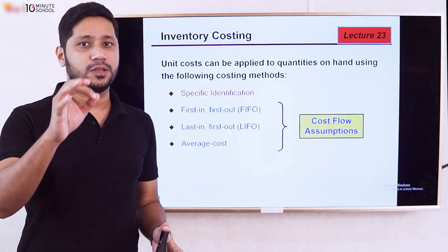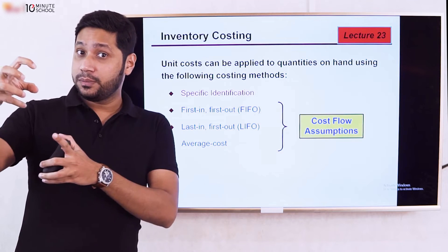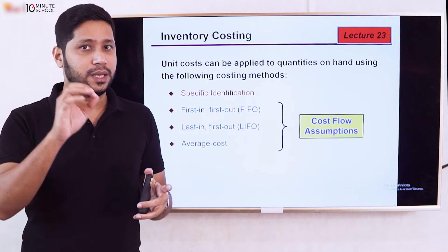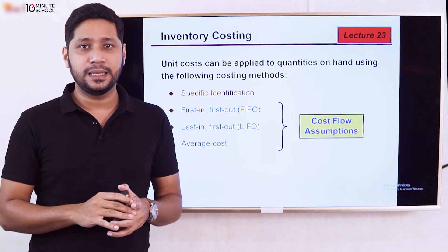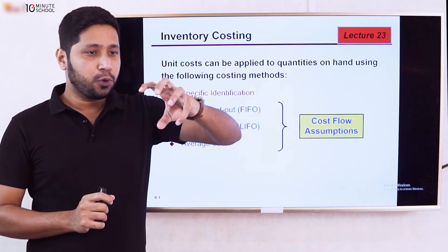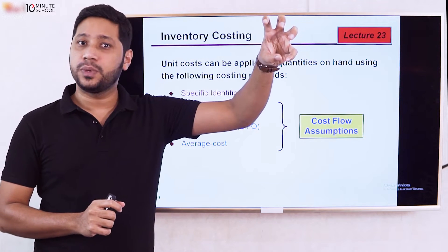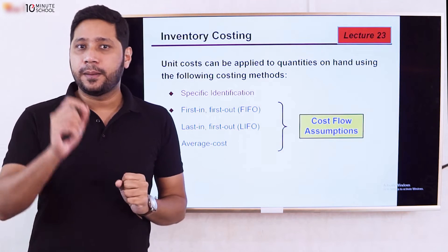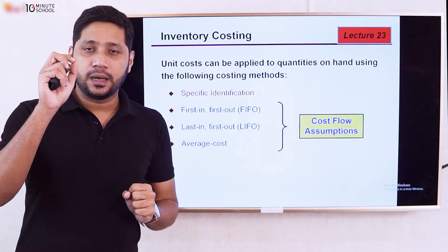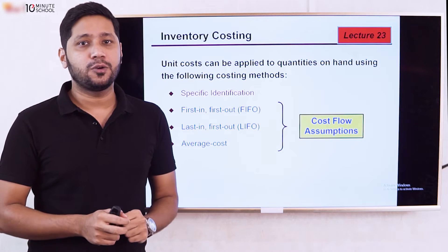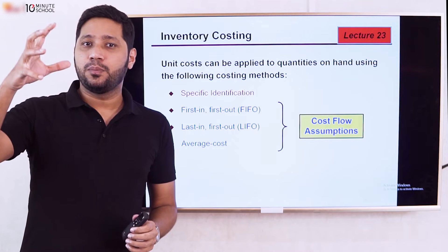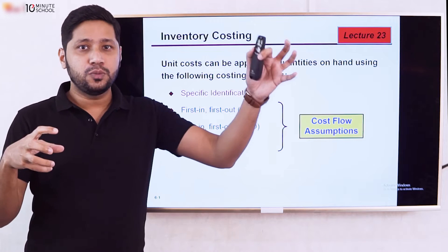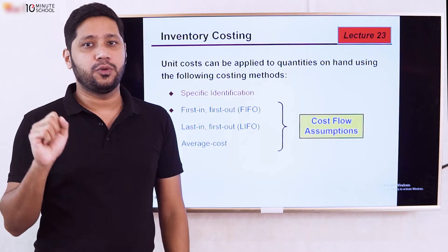When we follow LIFO — last-in, first-out — we take the last-in item and sell it first. So following this principle, the first value is 10 × 10 = 100, plus 1 × 15 = 15, giving a cost of goods sold of 115. Under FIFO, the first value is 10 × 10 + 10 × 20 = 300.